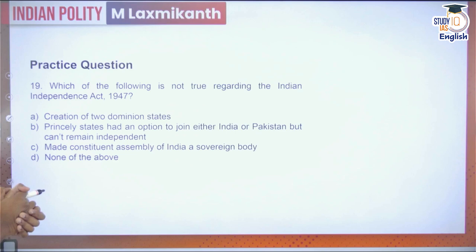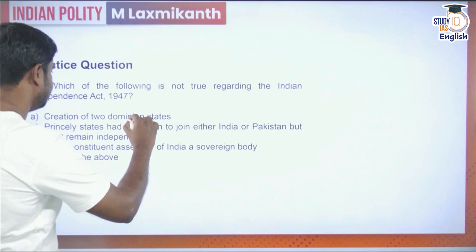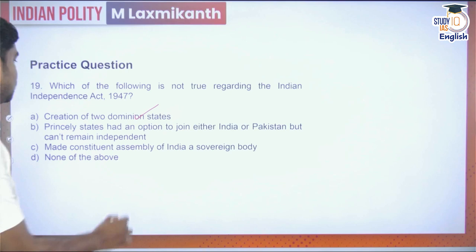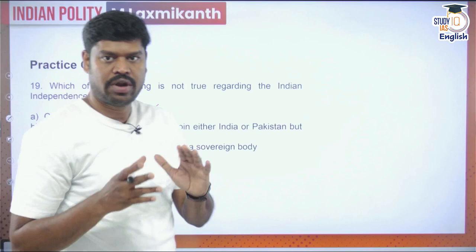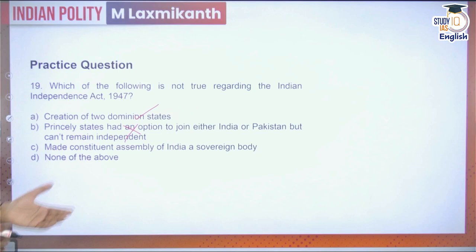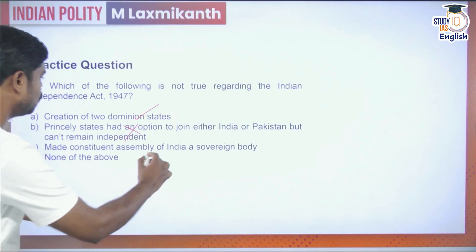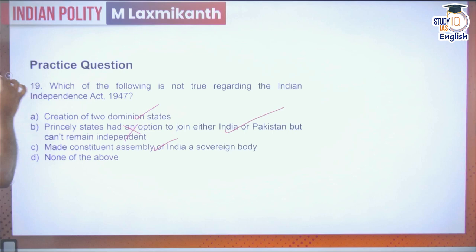Question 19: Which of the following is NOT true regarding the Indian Independence Act 1947? Statement 1 — creation of two dominion states — true. Statement 2 — the princely states had an option to join either India or Pakistan but cannot remain independent — this is NOT true; they could join India, join Pakistan, or remain independent. Statement 3 — it made the Constituent Assembly of India a sovereign body to create the constitution — true. The incorrect statement is option B.